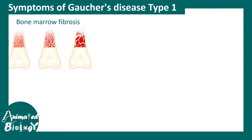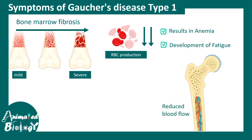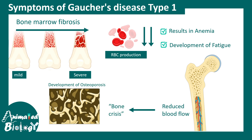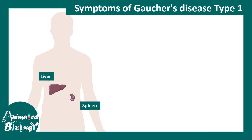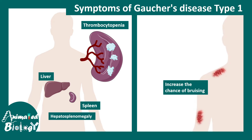Key symptoms of Gaucher's disease include bone marrow fibrosis, which can be mild to severe, leading to defects in RBC production, anemia, fatigue, and tiredness. Reduced blood flow in the bone creates a high chance of osteoporosis — an overall bone crisis in Type 1. Type 1 is also characterized by hepatosplenomegaly; the enlarged spleen affects platelet breakdown, leading to thrombocytopenia and increased bruising.